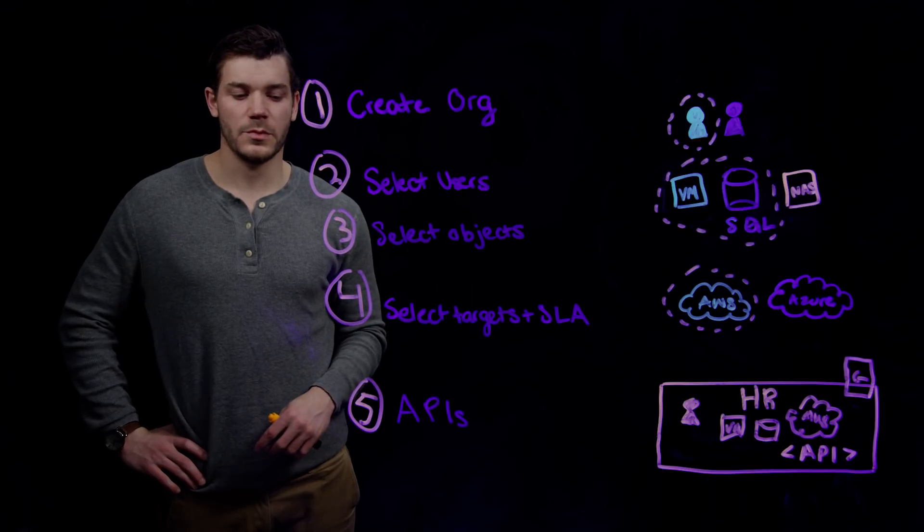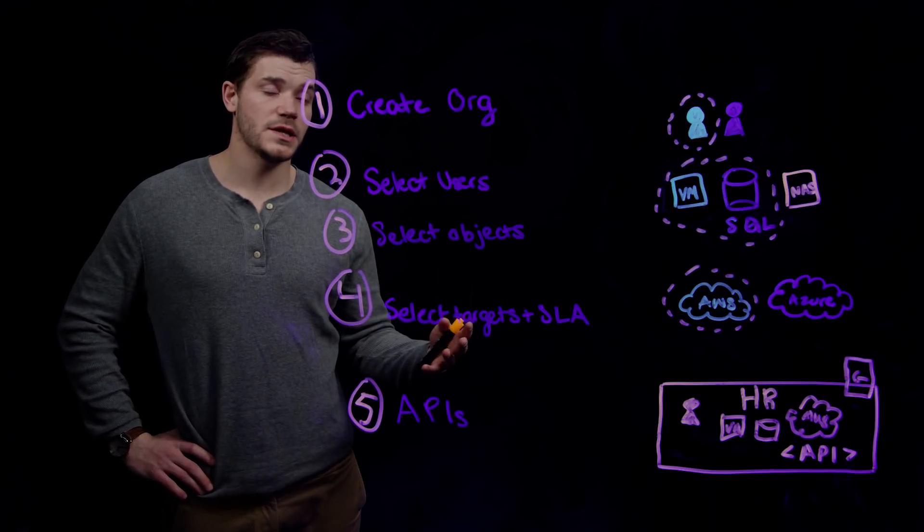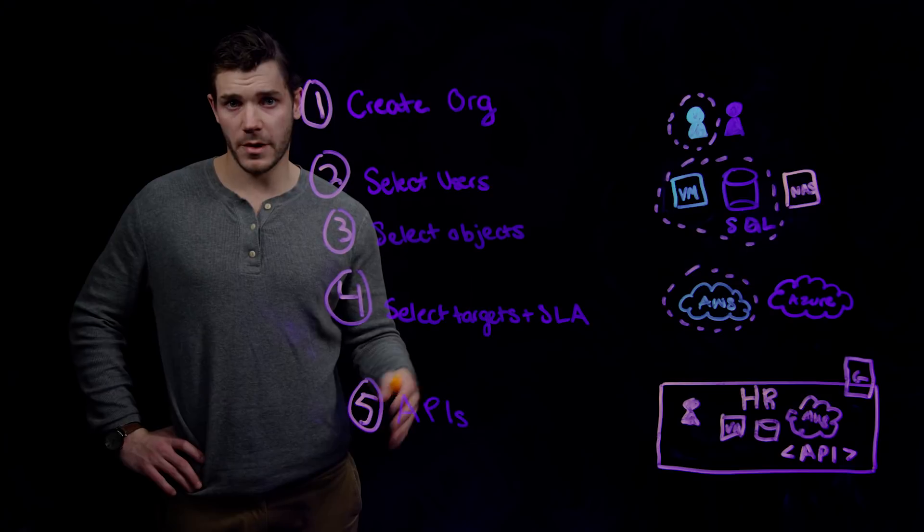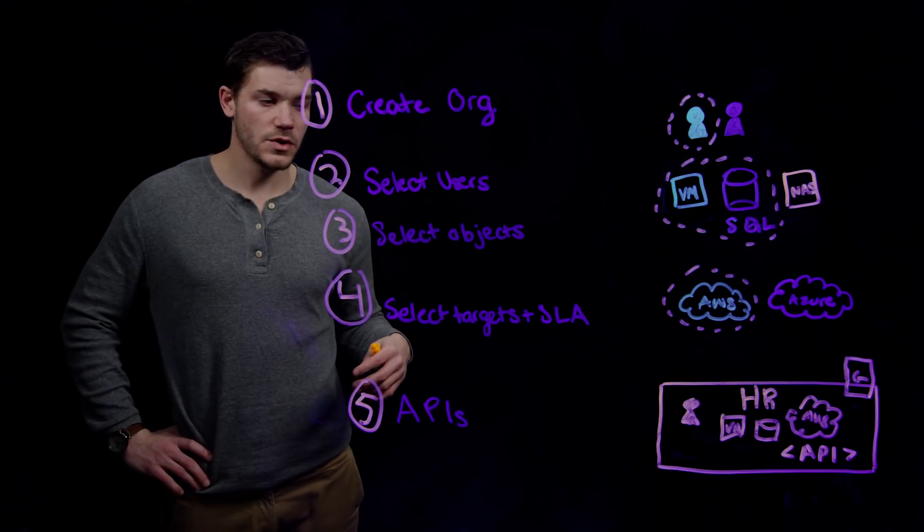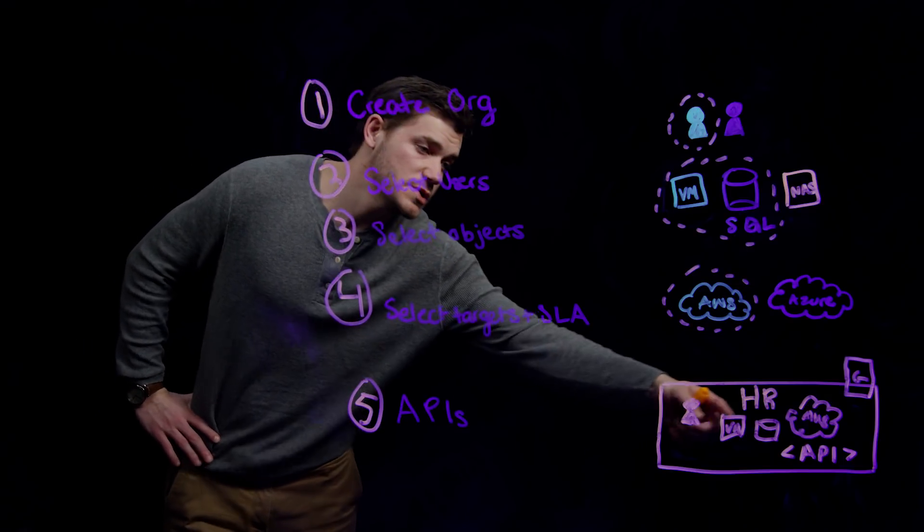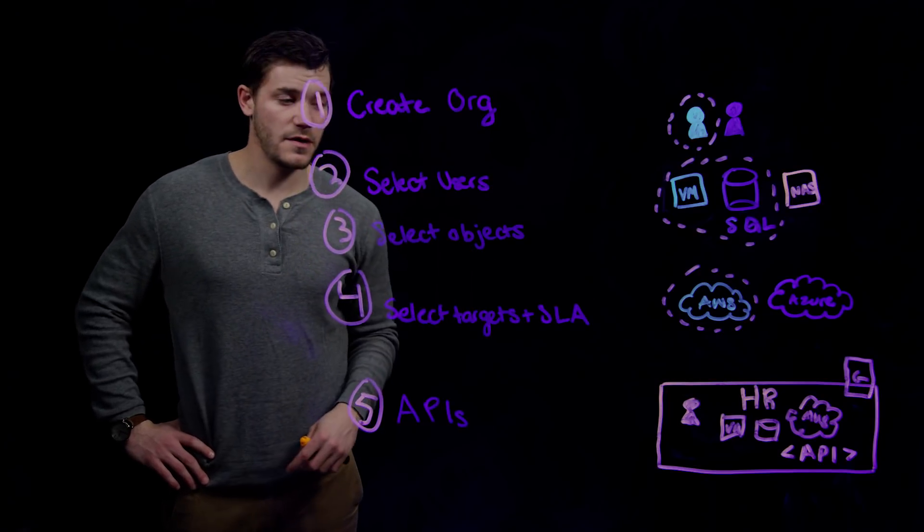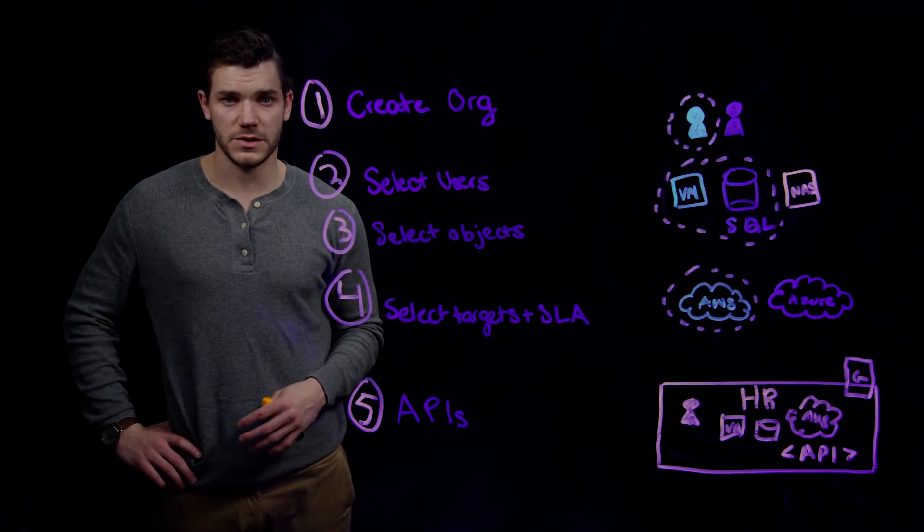Like the rest of the Rubrik platform, our multi-tenancy support is completely powered by RESTful APIs. All of the APIs will be scoped to the resources that we have put as a part of this new organization.